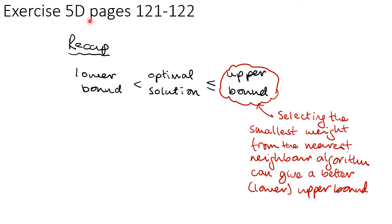You should now be able to do exercise 5D on the relevant pages. A quick recap: when finding an interval for our optimal solution, when it comes to the upper bound, carrying out the nearest neighbor algorithm — the lowest weight from all tours — can give us a better or lower upper bound, because we want to make the interval as small as possible.